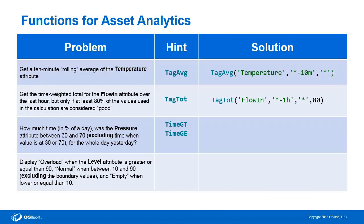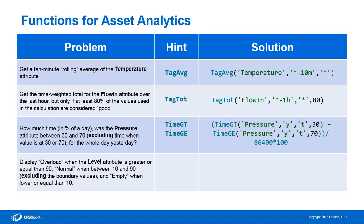We need to combine the greater than and greater than or equal to functions in order to make sure that we exclude the right amount of time. In this case, we're going to take the time that the pressure attribute from yesterday at midnight until today at midnight was greater than 30, and we'll subtract out the portion of time where it was greater than or equal to 70. After that, we'll divide by the amount of seconds in a day, which is 86,400, and to make it a percentage, we'll multiply by 100. This is a good example to show that you can string together multiple functions to get a more sophisticated equation.